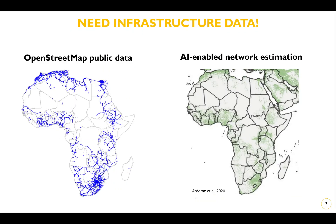But is it only tools that we need? Absolutely not. Tools are in reality a very small fraction of what is needed, because data are a very critical point for having accurate analysis. As we can show here, we have public data on network infrastructure in Africa on the left-hand side — particularly from OpenStreetMap — and these are freely accessible.